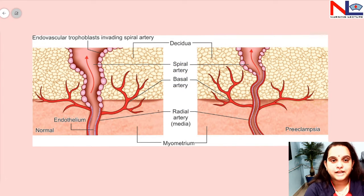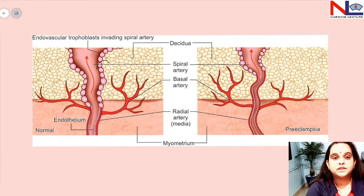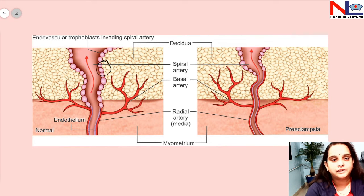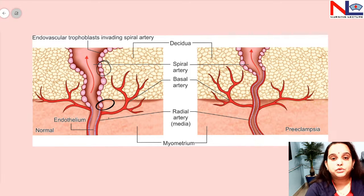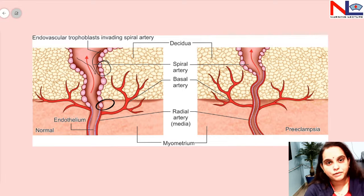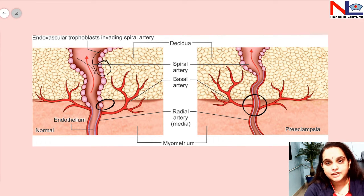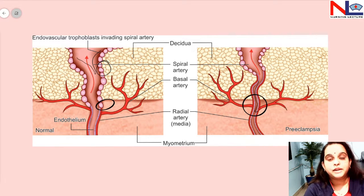In normal conditions, the first wave invades the spiral arteries during the first trimester, and in later trimesters, cytotrophoblastic invasion proceeds into the radial arteries to create large-bore uteroplacental arteries. In preeclampsia, however, the second wave does not occur in the myometrial lining. As a result, the vessels remain narrower and do not dilate — the resistance is higher and the flow is reduced in women with preeclampsia.